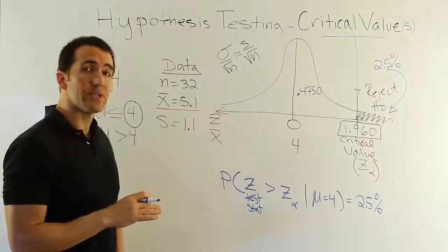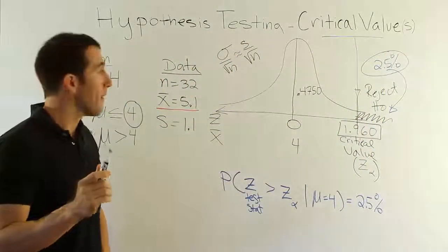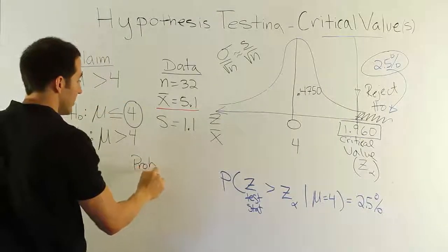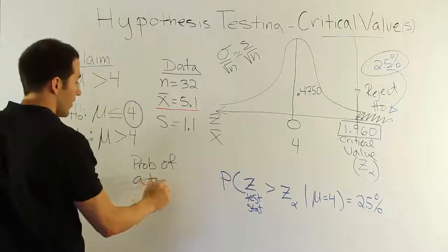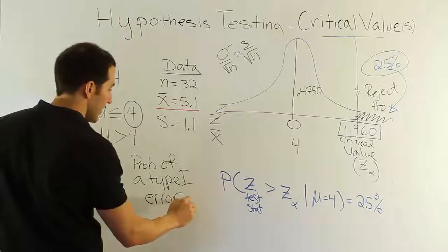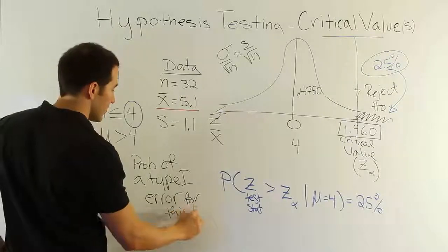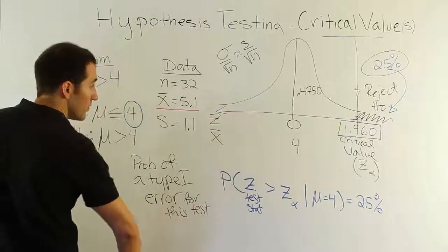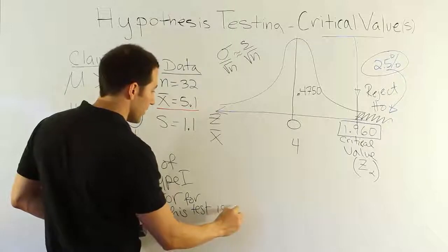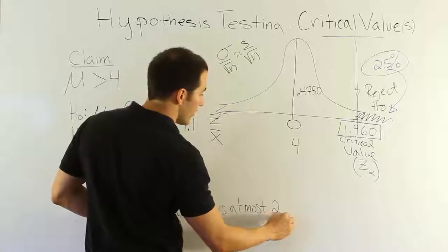Either way, let's go back and recap what we just did. What we did is we set the probability of a type 1 error here to be 2.5%. In general, what we've just done is we set this: the probability of a type 1 error for this test is at most 2.5%.